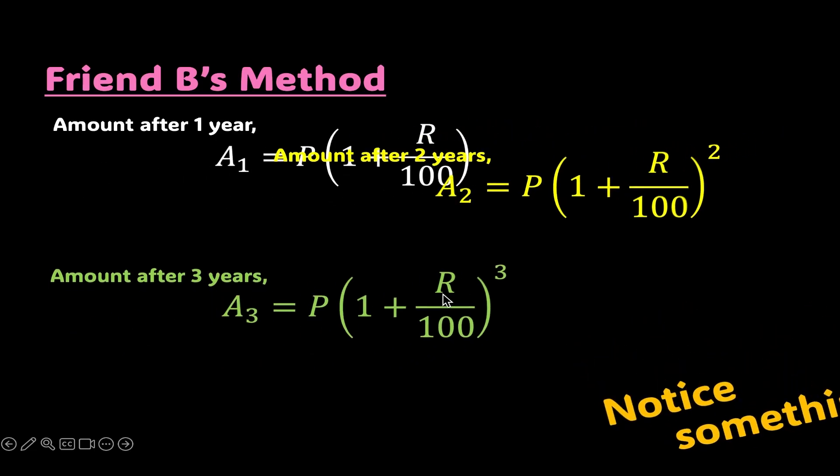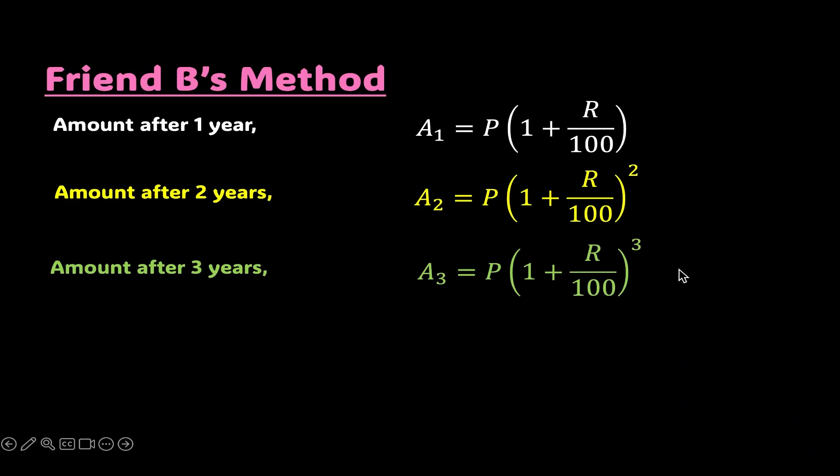If you have been involved so far in the calculations, you must have noticed that it seems like this quantity 1 plus R over 100 is getting multiplied for each year and that indeed is the case. I highly recommend you to try to calculate the amount after 4th and 5th year to really solidify this idea.